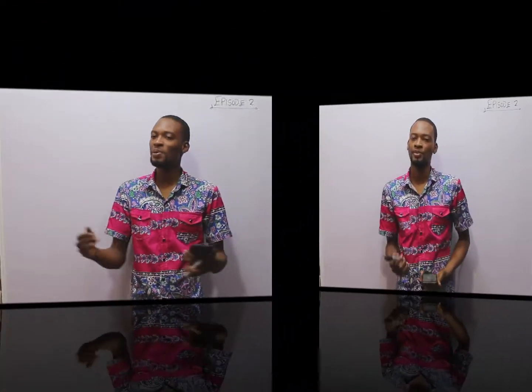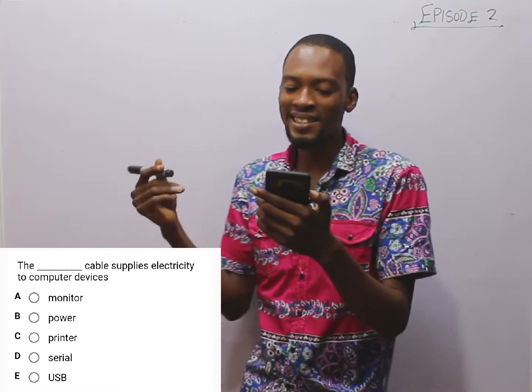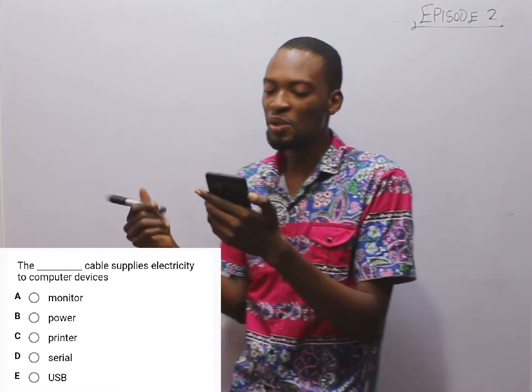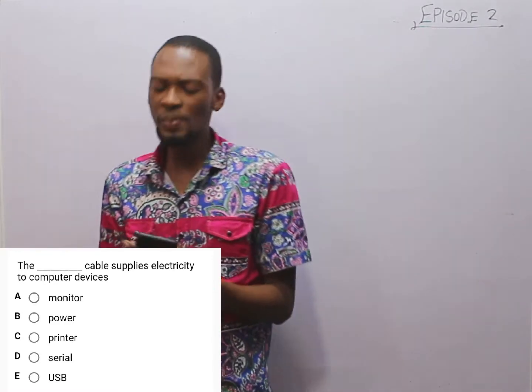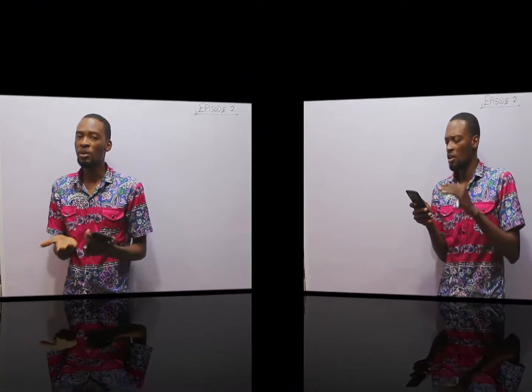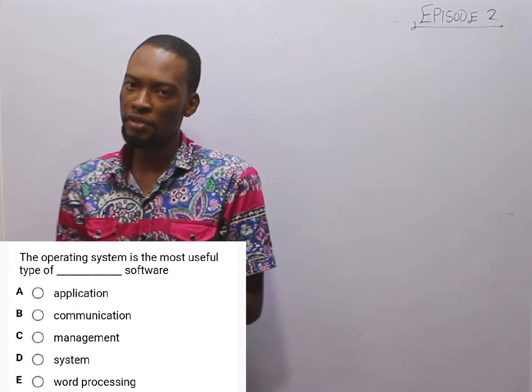Watching on YouTube, the links are below to the applications, important videos, and resources that will help you. The first question says: the dash cable supplies electricity to computer devices — it is simply the power cable. The operating system is the most useful type of dash software — the operating system is simply a system software.